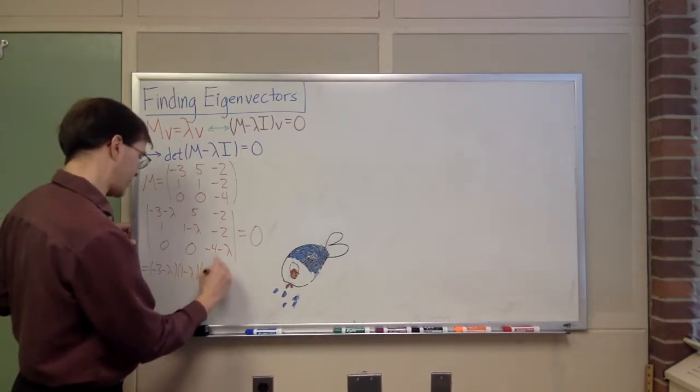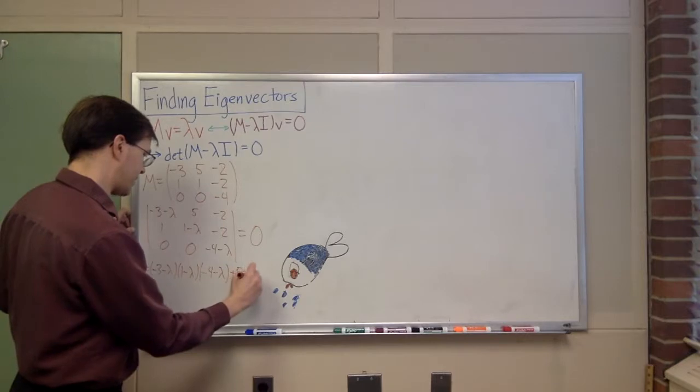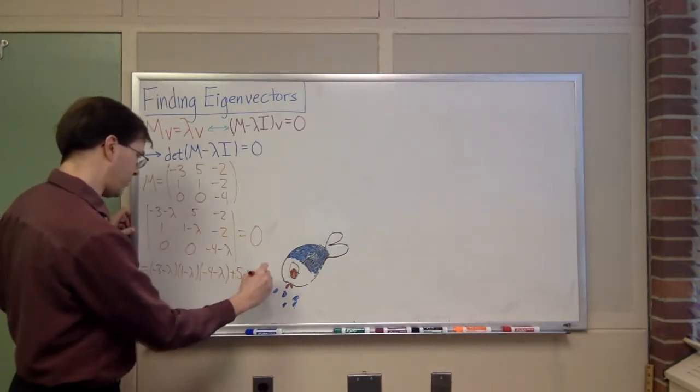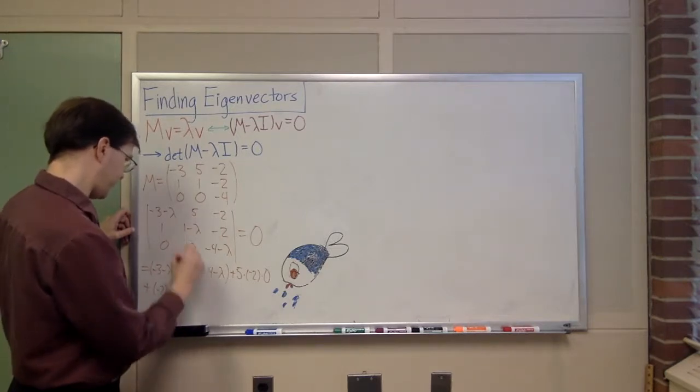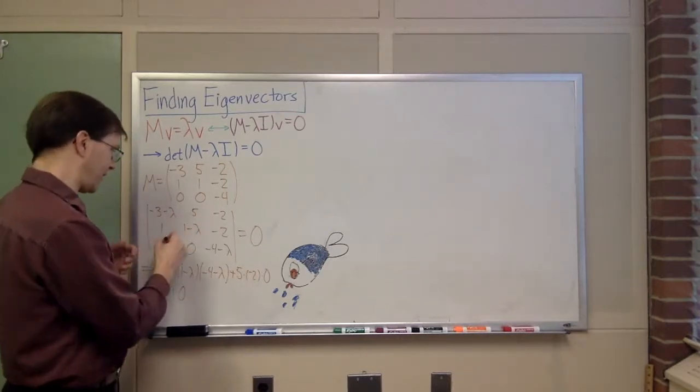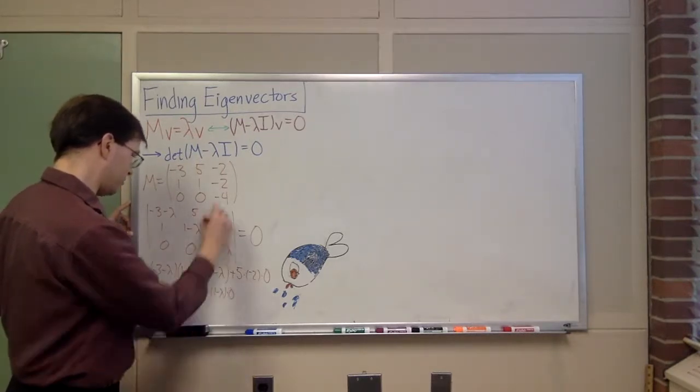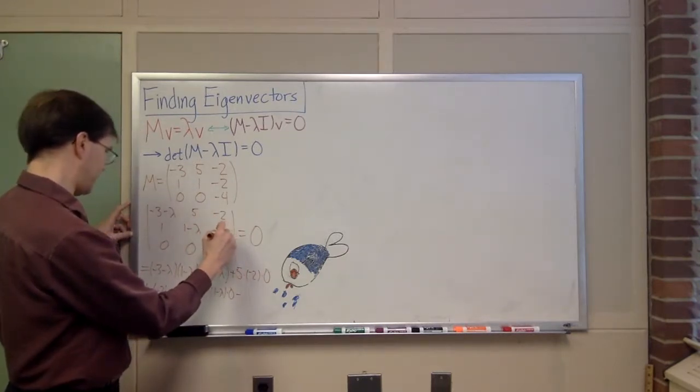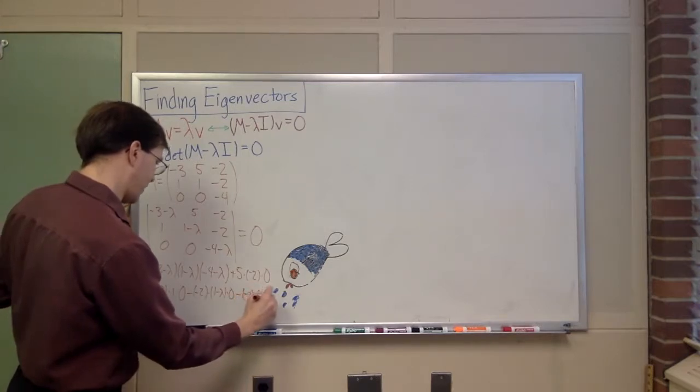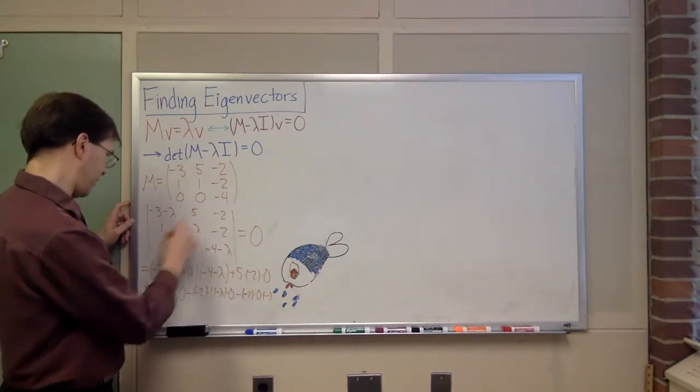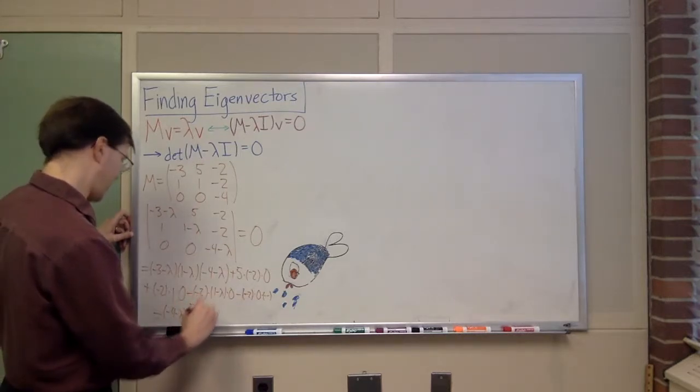So I get -3 minus lambda times 1 minus lambda times -4 minus lambda, multiplying down the main diagonal. Plus 5 times -2 times 0, plus -2 times 1 times 0. That's those three forward diagonals wrapping around the edges. And then backward diagonals. Minus -2 times 1 minus lambda times 0. Minus, next one is here, -2, 0, -3 minus lambda.